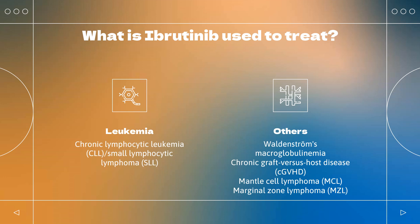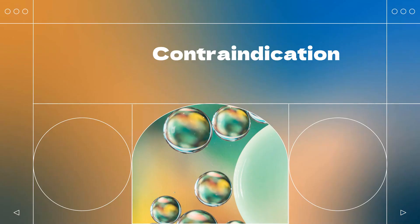Mantle Cell Lymphoma (MCL): In Europe and Canada, ibrutinib is indicated to treat relapsed or refractory MCL in adults. Marginal Zone Lymphoma: In Canada, it is approved for adults who require systemic therapy and have received at least one prior anti-CD20-based therapy.